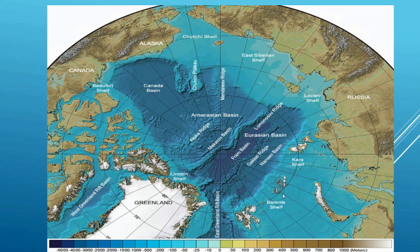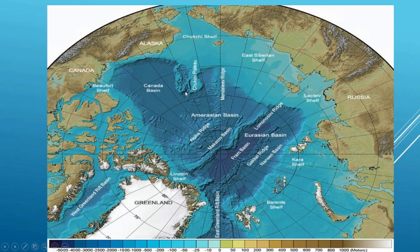A couple of other features: the Barents Shelf with the Barents Sea, the Kara Shelf with the Kara Sea, the Laptev Shelf with the Laptev Sea, and the East Siberian Shelf with the East Siberian Sea. Now that you have a handle on these important features, let's move on.